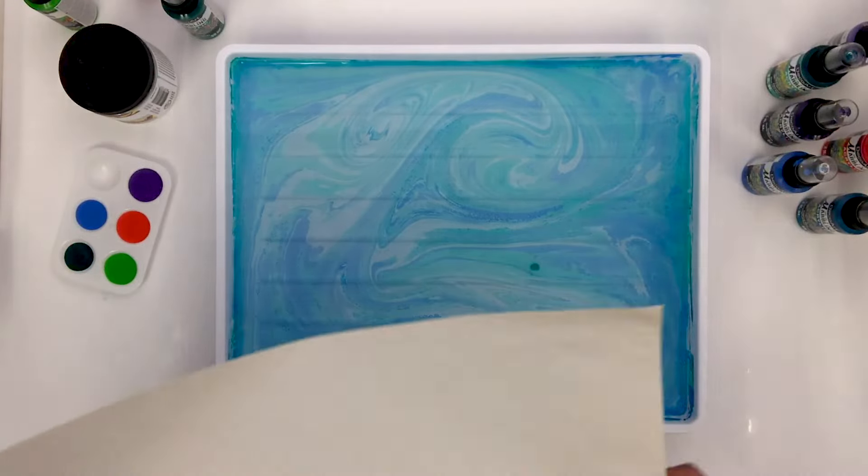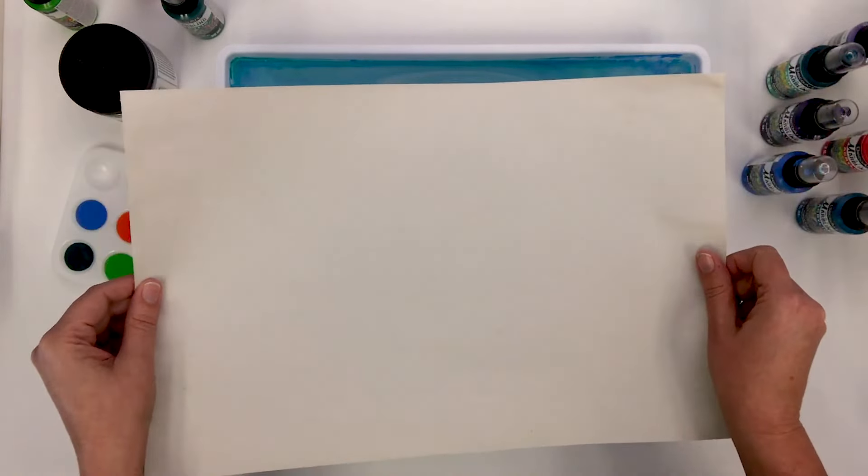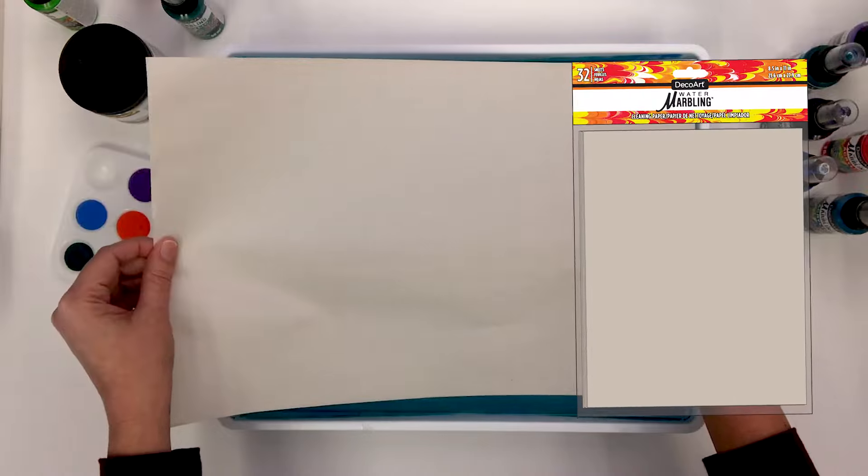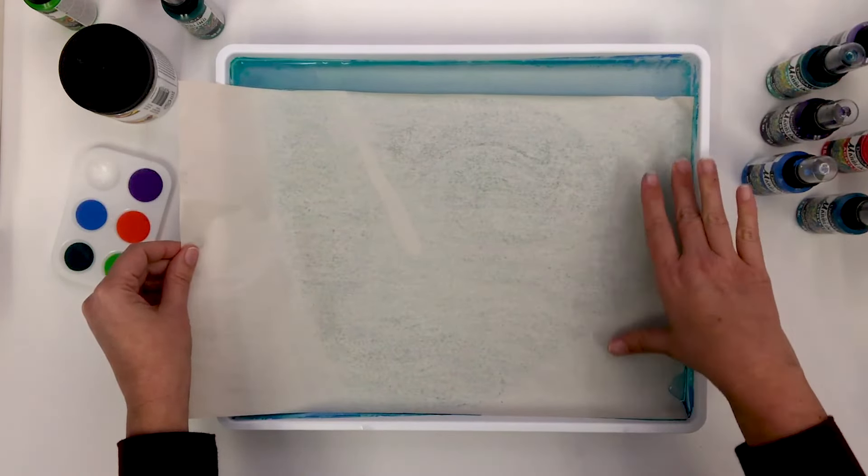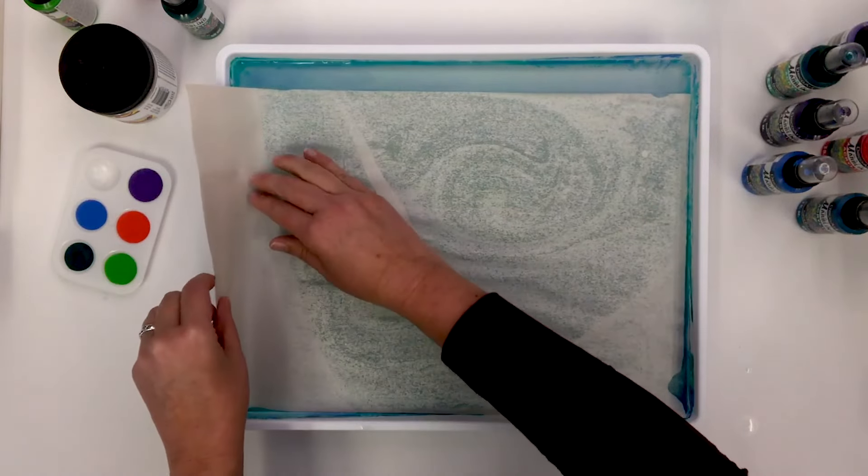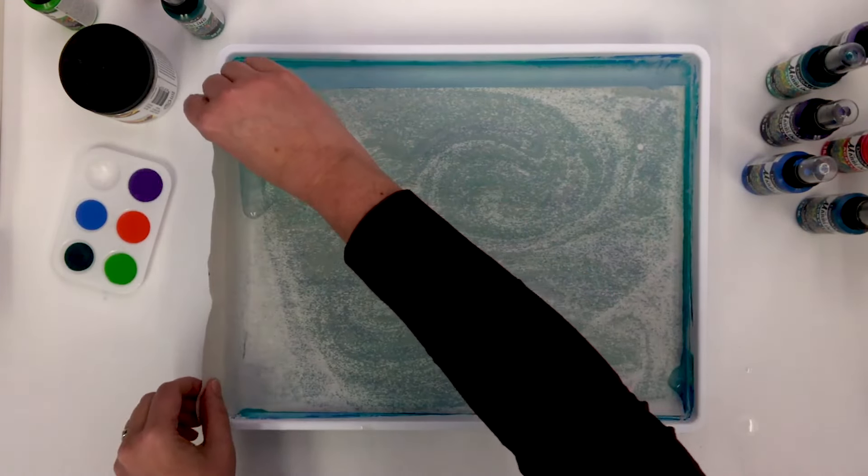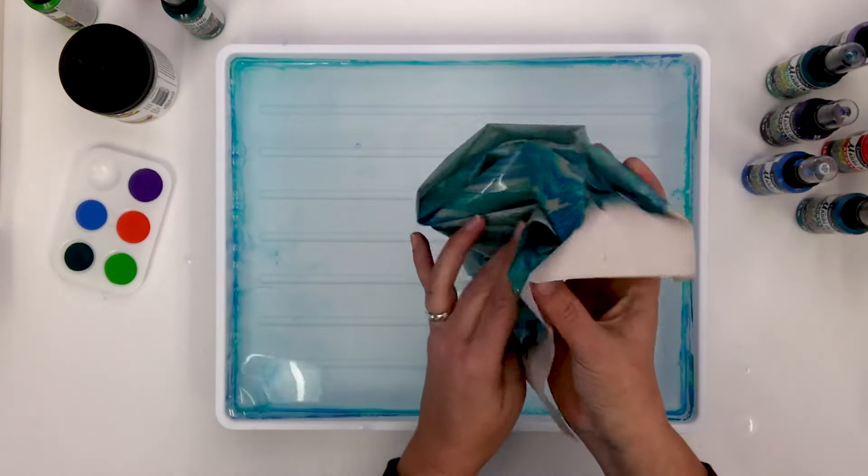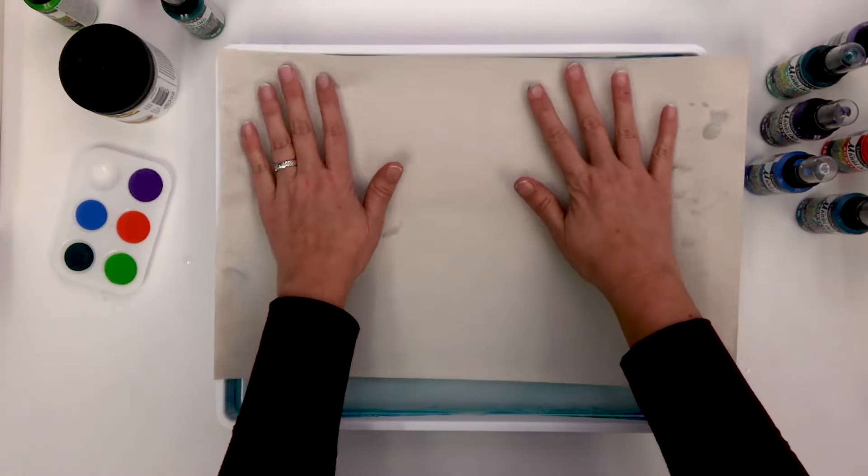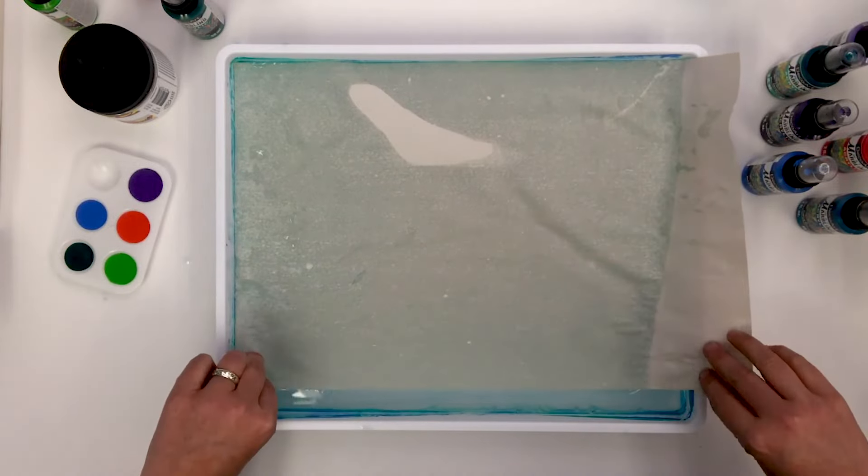Want to make another design? The size can be cleaned and reused many times. DecoArt water marbling cleaning paper makes it easy to keep your size clean for your next design. Simply press the paper down gently onto the surface of the size. Pull the cleaning paper up just like you're pulling a print and discard. Repeat this process until all the paint is removed and your size is clean.